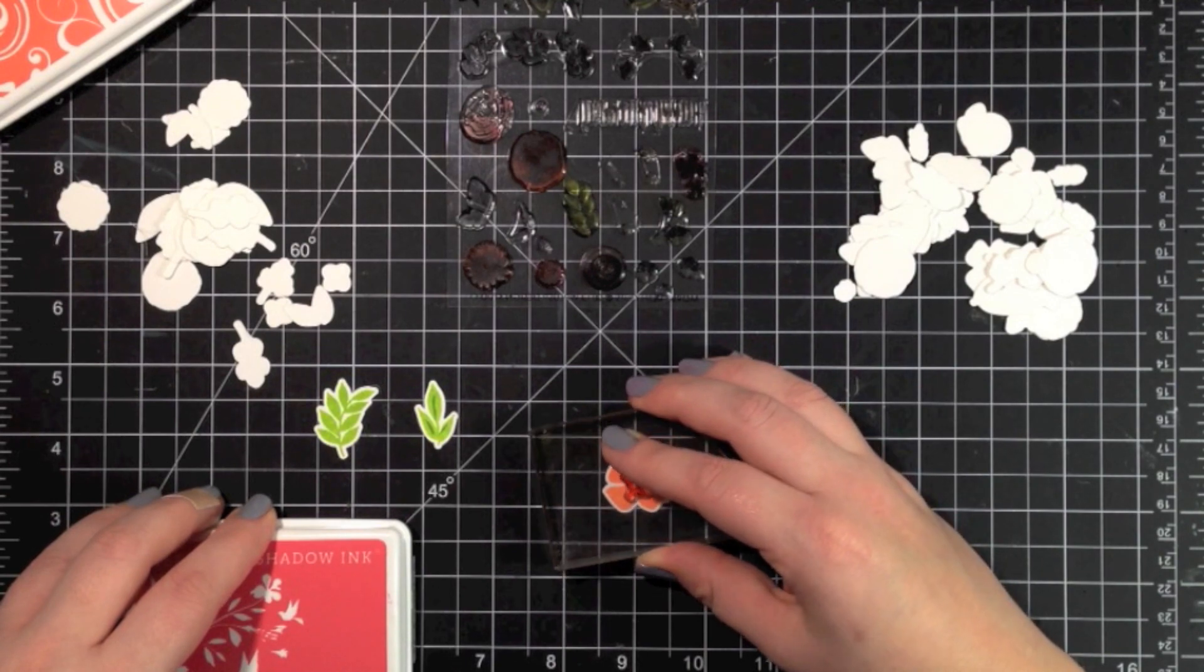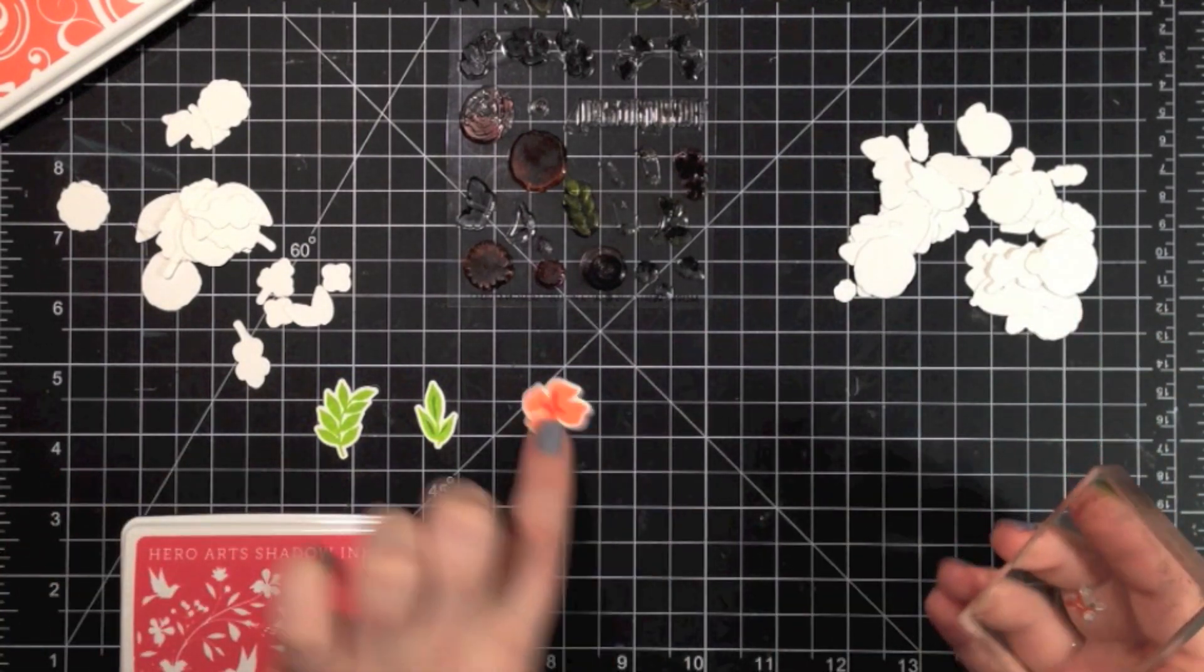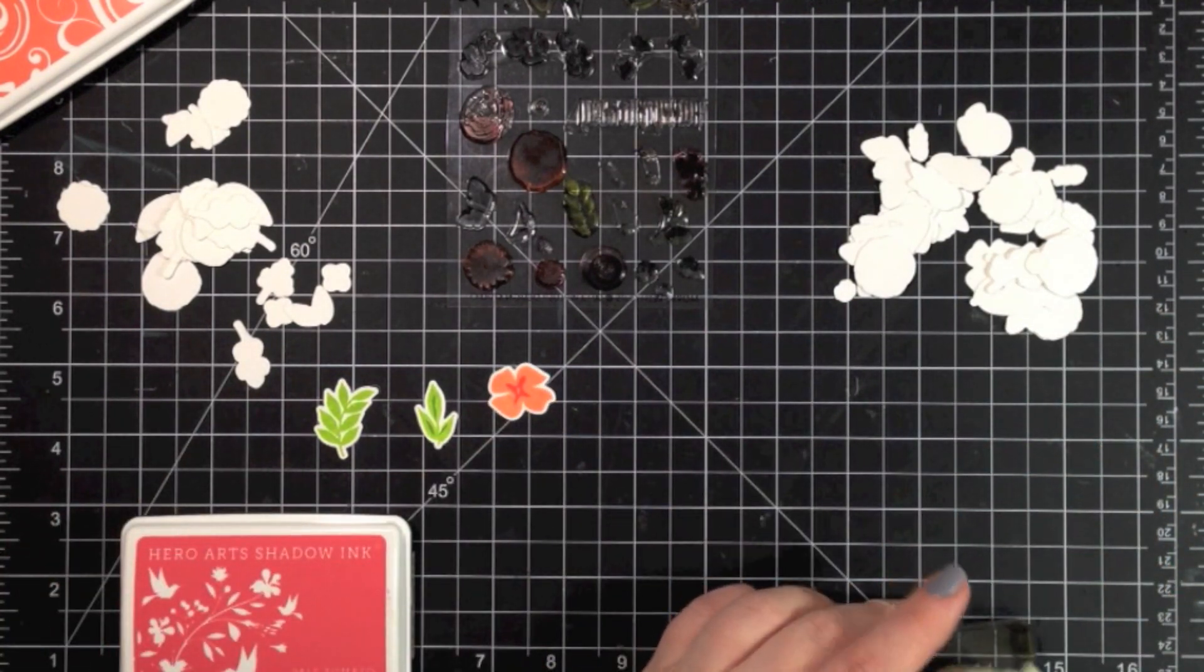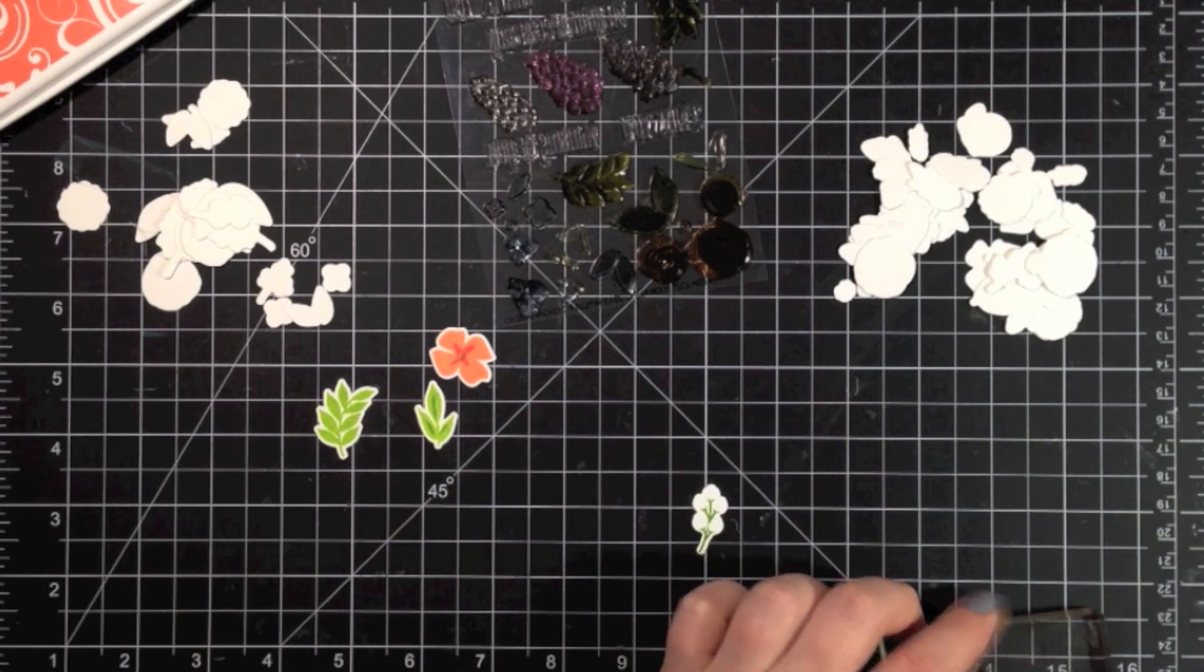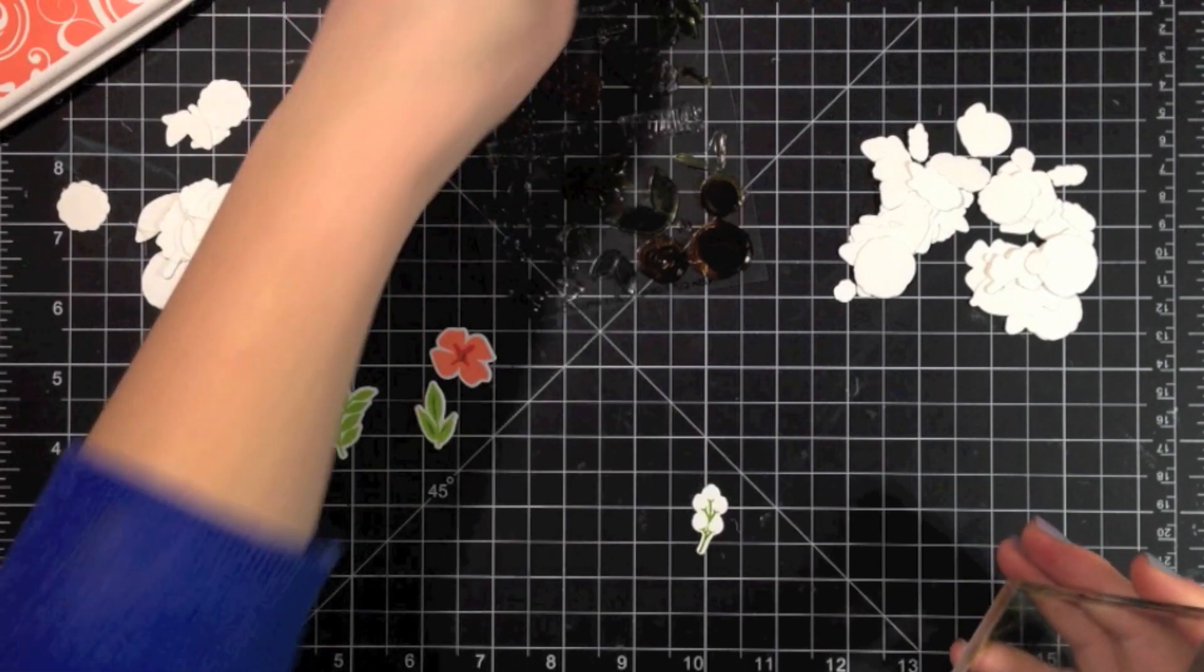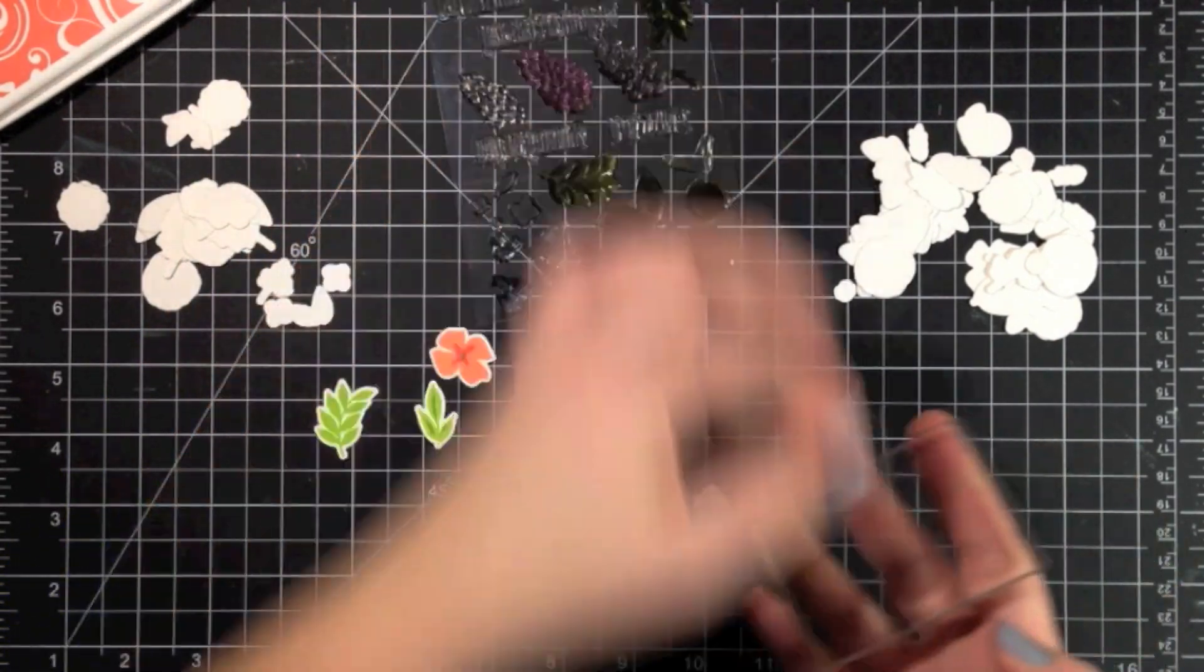This one also has a stamp that can be stamped on top, and there's actually a third stamp as well, which is the center area. But I didn't get that on film, but I just went and stamped that one with olive ink.